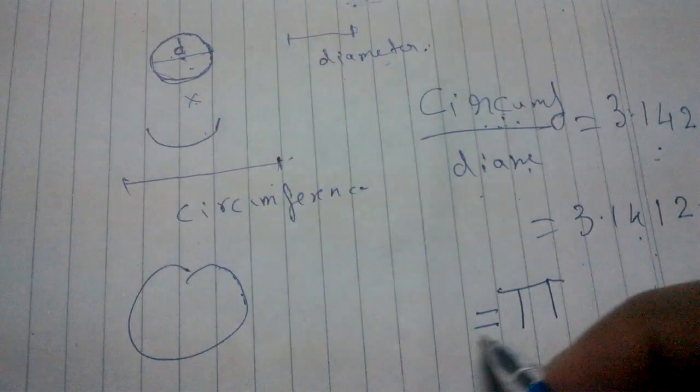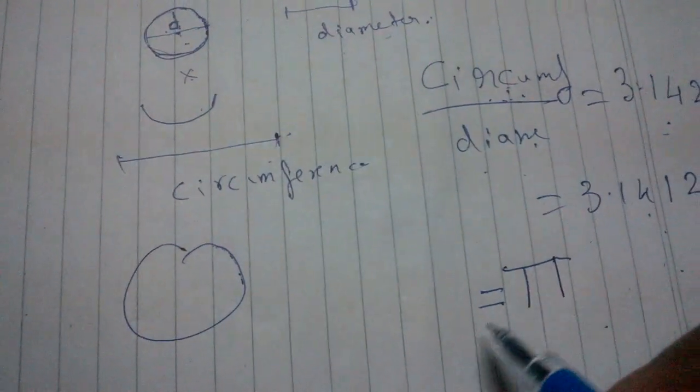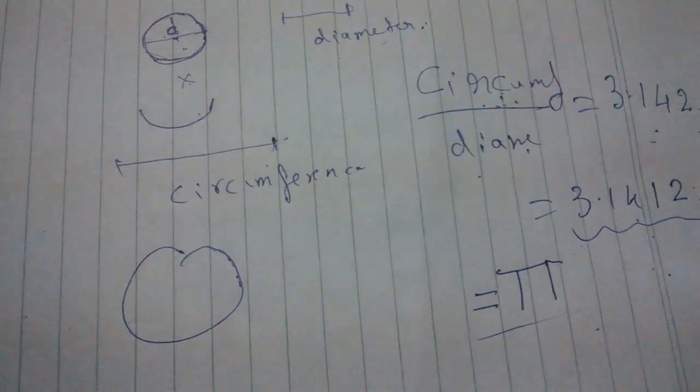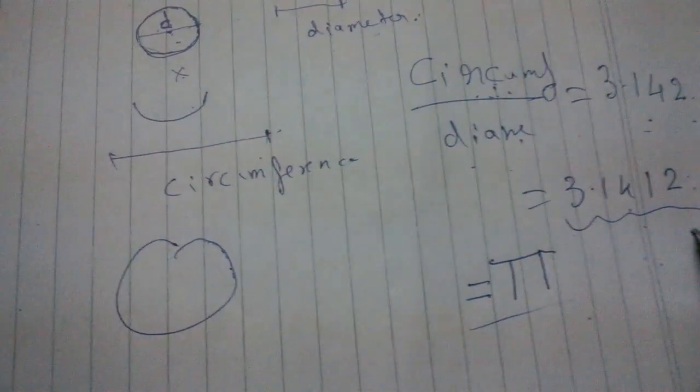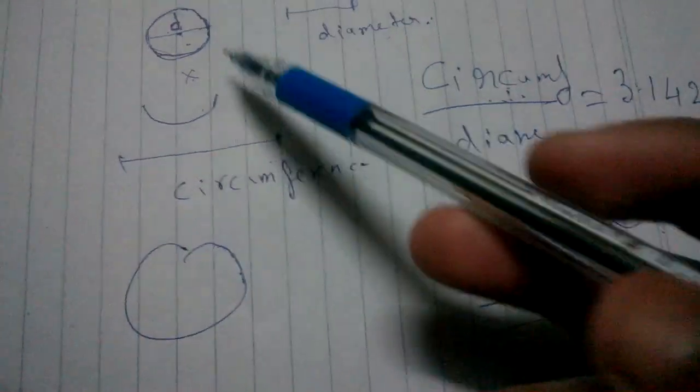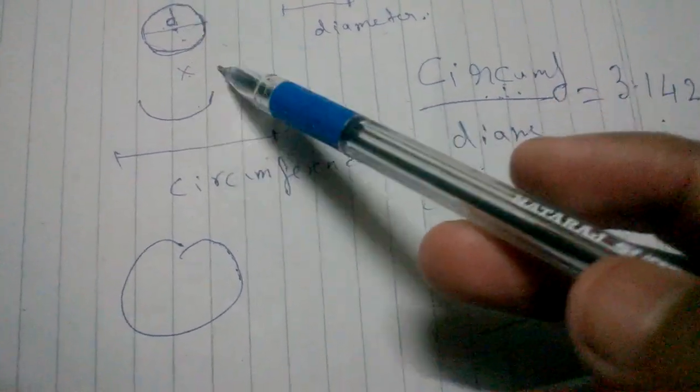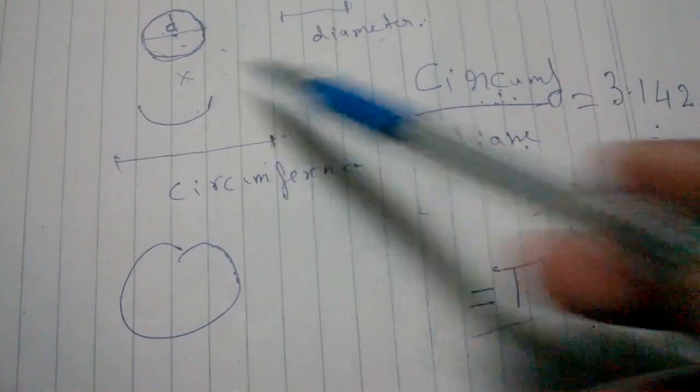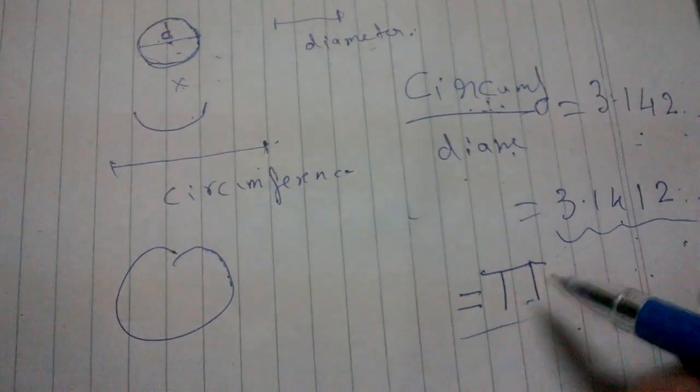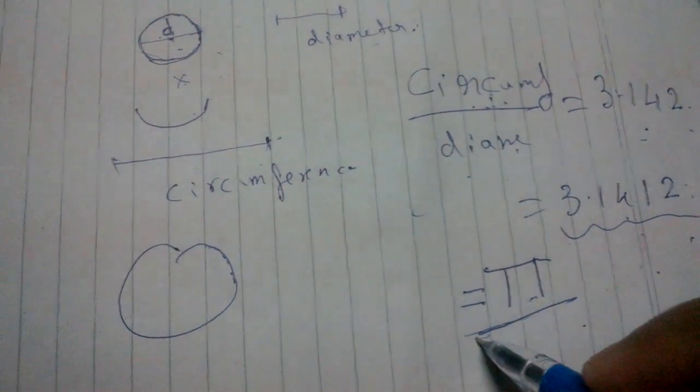And the significance of pi can be learned from this fact: this pi, this number, keeps on repeating in many equations of physics because there is always a circle, which is the most available shape in nature. So this pi keeps on repeating, so it's a very important notation in physics and mathematics.